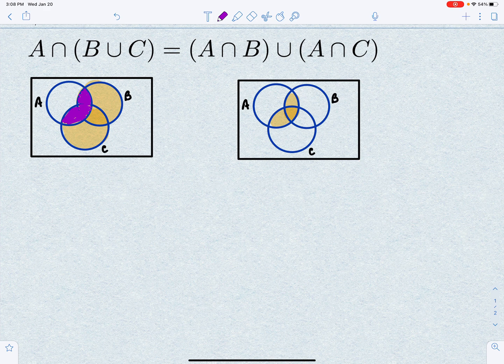So there is some believability here about this. So we're going to actually prove it analytically, without pictures, because Venn diagrams could lead us astray sometimes.